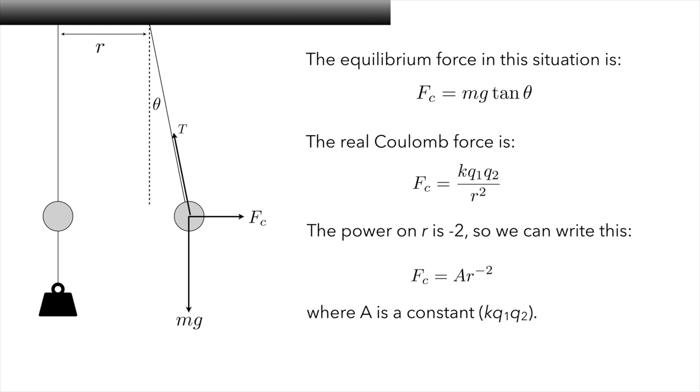So we can actually rewrite the Coulomb force law as fc is equal to a times r to the negative two, where a is a constant. Of course, in the real force law, we know that that constant has about the value of k q1 q2, but we're going to pretend that we don't know it and we're just going to focus on the power negative two.